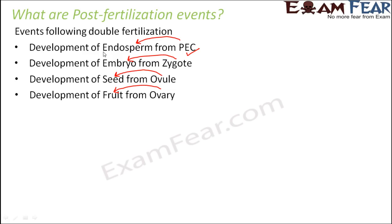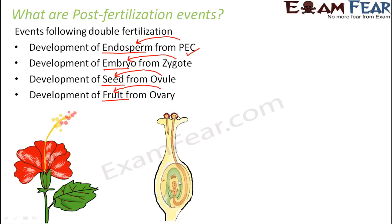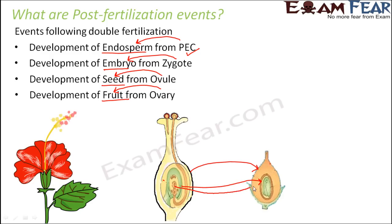We will talk about each of these structures one by one: endosperm, embryo, seed, and fruit. In this diagram, the flower contains the ovary and ovule. Gradually this ovary turns into the fruit, while the ovule inside becomes the seed. Inside the ovule, the zygote becomes the embryo, and you have the endosperm to provide nourishment. Inside the fruit you have the seed, and even inside the seed you can find the embryo and its different parts, showing how it gives rise to a new plant.